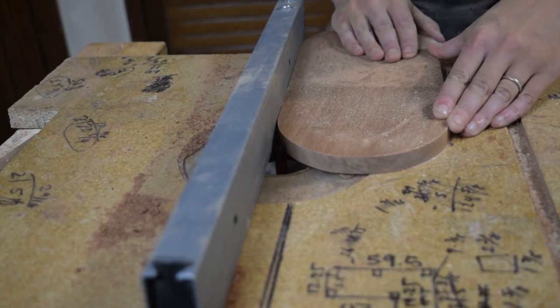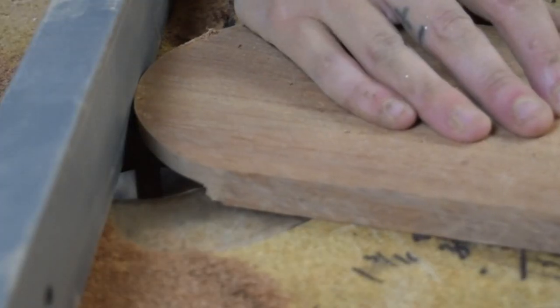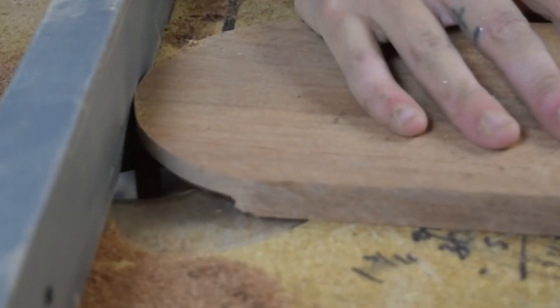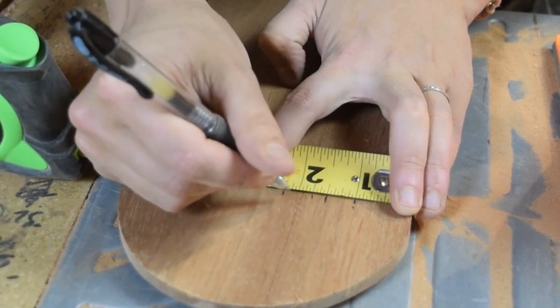With a straight gouge, I cut a rabbet around the entire bottom edge of the base. After that was cut, I measured and marked the cut lines for the earring tray.